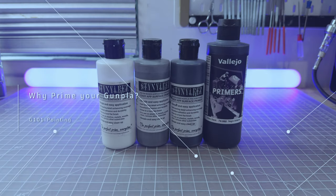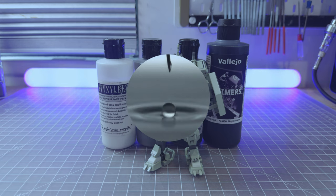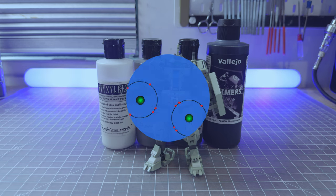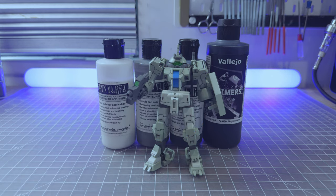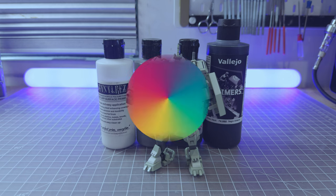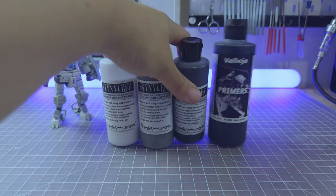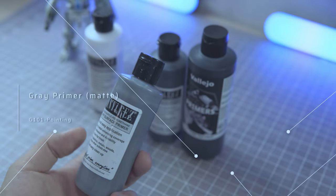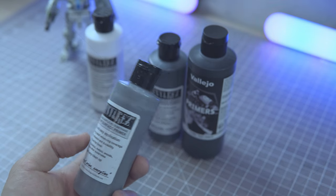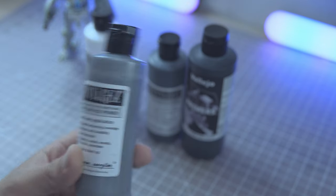Why should you prime your gunpla? Priming is vital for gunpla painting because it offers some benefits. A prepared surface for paints, ensuring the smooth finish. It enhances paint bonding between paint and a plastic, reducing the risk of chipping and peeling. It also improves the color vibrancy. Here we have four different color of primer. These three are Badger brand. This is Vallejo brand. Gray primer is ideal for classic Gundam color schemes. Maintains original paint hues. If you're not sure what primer to use, just use gray. It will work.